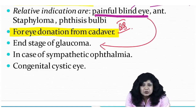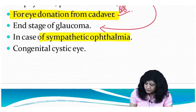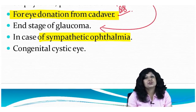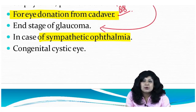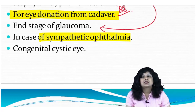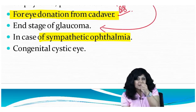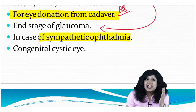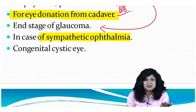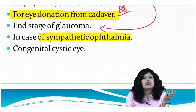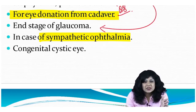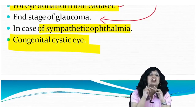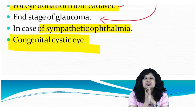Enucleation is also indicated for sympathetic ophthalmitis — bilateral pan-uveitis due to trauma to the ciliary body. If evisceration is done, some uveal tissue may be left behind, which can trigger sympathetic ophthalmitis again. Therefore, in sympathetic ophthalmitis, you must remove the eyeball as a whole — enucleation is the procedure of choice. Congenital cyst of the eye is another indication for enucleation.